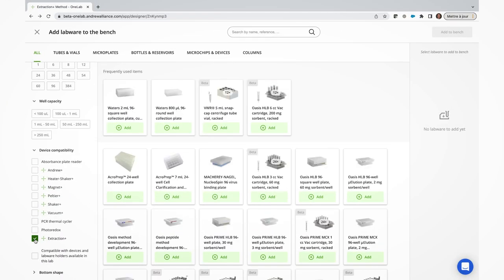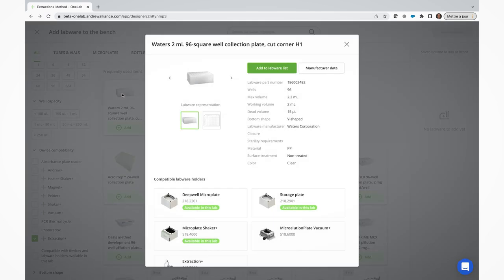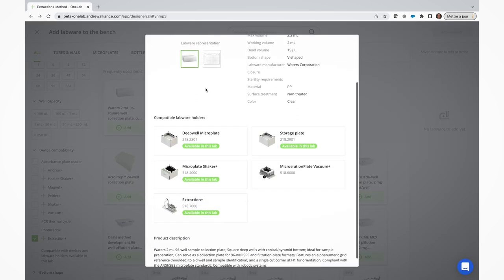So let me show you how to create a protocol step that will utilize the power of the Extraction Plus device. Let's start with a selection of compatible labware. Once in the protocol designer window of OneLab, filter out the consumable list to show our current options.